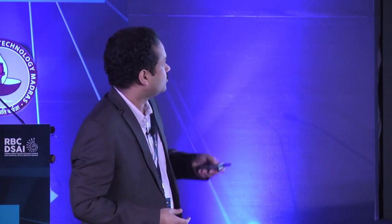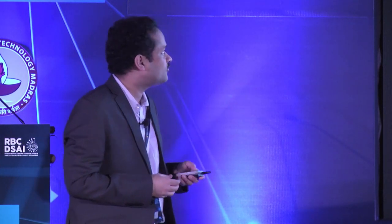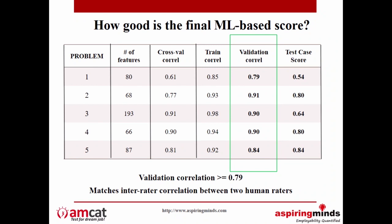This is the result, benchmarked on five different problems. On the right you can see the test case baseline: if you just use test cases, what correlation do you get with human grades? All codes were graded by humans, and we saw the machine learning technique gives validation correlations above 0.79, whereas test cases get 0.54 and 0.64. This correlation matches the inter-rater correlation when you have multiple human raters reading these codes. The new features we designed really add incremental value — using just bag-of-words doesn't perform as well.